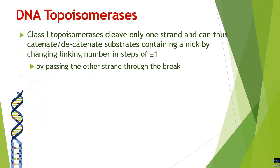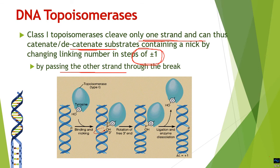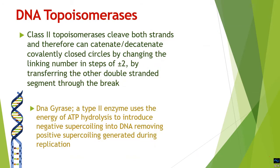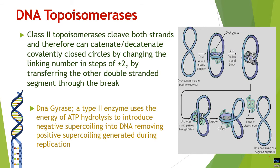Type I topoisomerase cleaves only one strand and can decatenate by a step of plus or minus one, passing one strand through the break. As shown in the picture, topoisomerase causes a nucleophilic attack at the site where it has to relax torsional strain, forming a transient bond between itself and the five prime end of that strand. It then moves the unbroken strand through this nick, releasing the torsional strain by a step of plus or minus one, after which it dissociates from the complex.